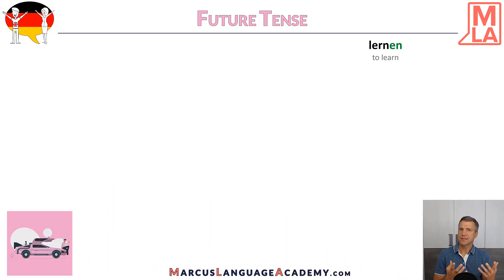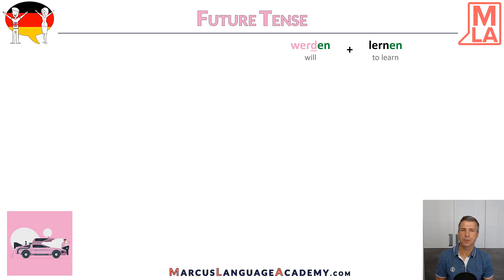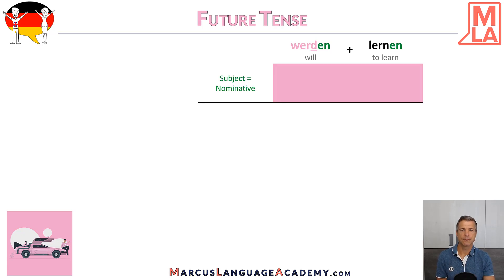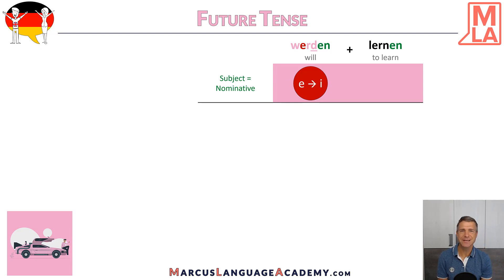Let's take a normal verb — let's say 'lernen', to learn. We need to put this verb in the future tense using an auxiliary verb. This auxiliary verb in German is 'werden', something similar to English 'will'. We need to conjugate this verb. Important thing is, 'werden', sadly, is also an irregular verb, which means it changes the root of the verb.